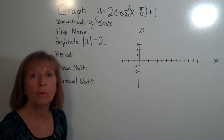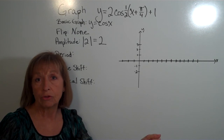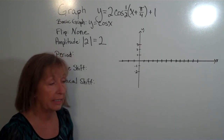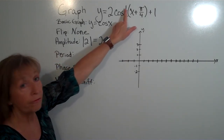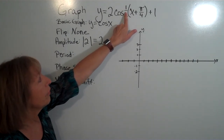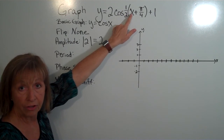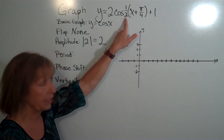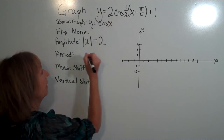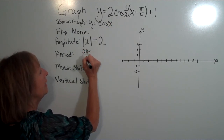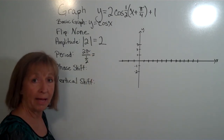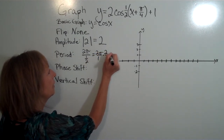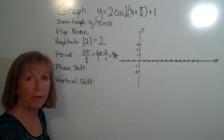For the period: to find the new period from any horizontal stretches or compressions, take the coefficient in front of the angle and divide the regular period by that coefficient. The normal period for cosine is 2π. Two pi divided by one-half — dividing by a fraction means multiplying by the reciprocal — so 2π/1 × 2/1 = 4π. Our new period is 4π.